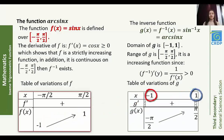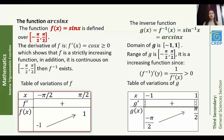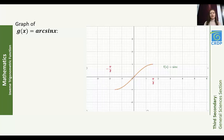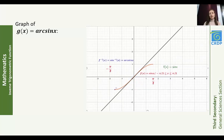The table of variations of g: the domain is [-1, 1], the derivative is positive, and g(x) varies from −π/2, strictly increasing, to π/2. Note that g' is not differentiable at ±1. The graph of g(x) = arc sine x: the graph of f(x) = sin(x) is defined from −∞ to +∞, but we limit our study to [-π/2, π/2]. The graph of the inverse function is symmetric to that of f with respect to y = x. We take a point on the curve of f and draw its symmetric with respect to y = x to obtain the curve of arc sine x.